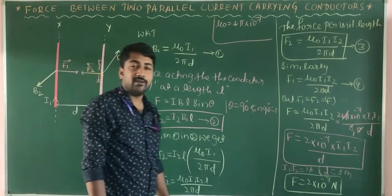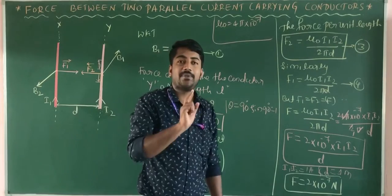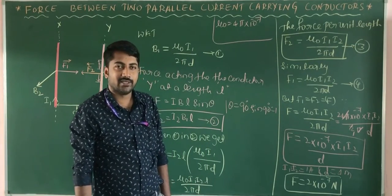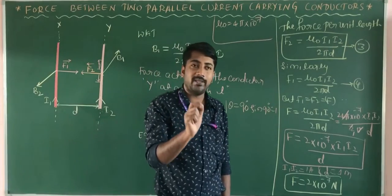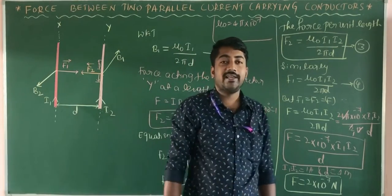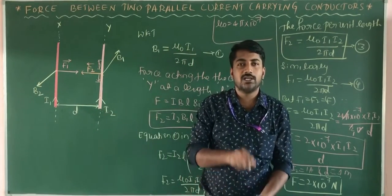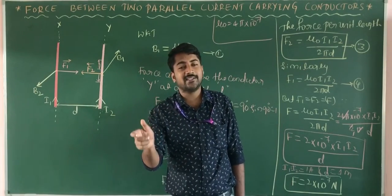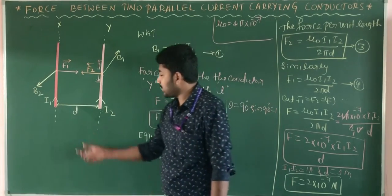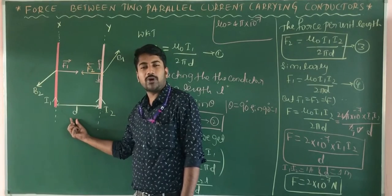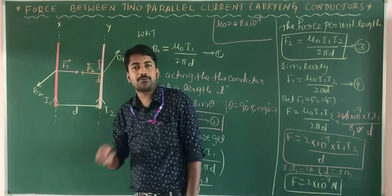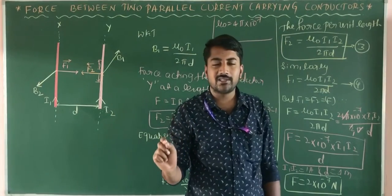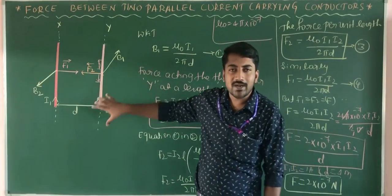How do we define 1 ampere? One ampere is defined as the steady current which, when flowing through two parallel current-carrying conductors separated by a distance D = 1 meter in vacuum, produces a force of 2 × 10⁻⁷ newton per meter length between them. This is the definition of 1 ampere.